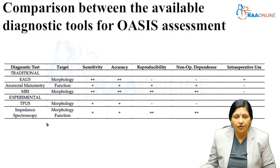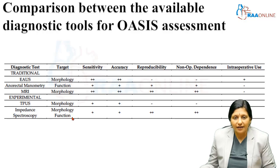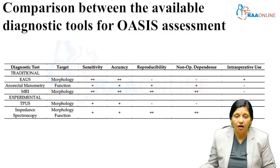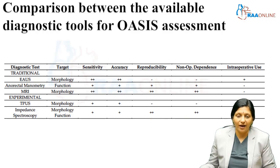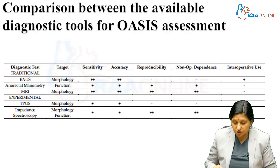Impedance spectrography is a new method. It looks at the morphology of the sphincter. It has good sensitivity and accuracy, is reproducible, and is non-operator dependent, but it cannot be used inside the operation theater while repairing the anal sphincter.